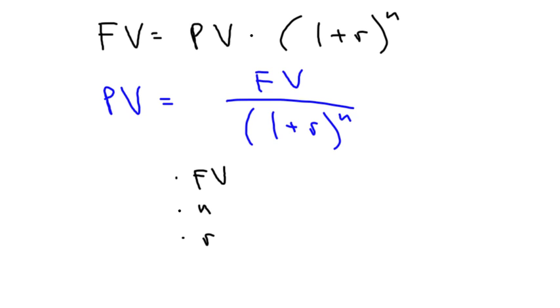Well, here's the formula. We've seen before that future value is equal to present value times (1+r) to the n, so by simple substitution, we have present value equal to future value divided by (1+r) to the n,